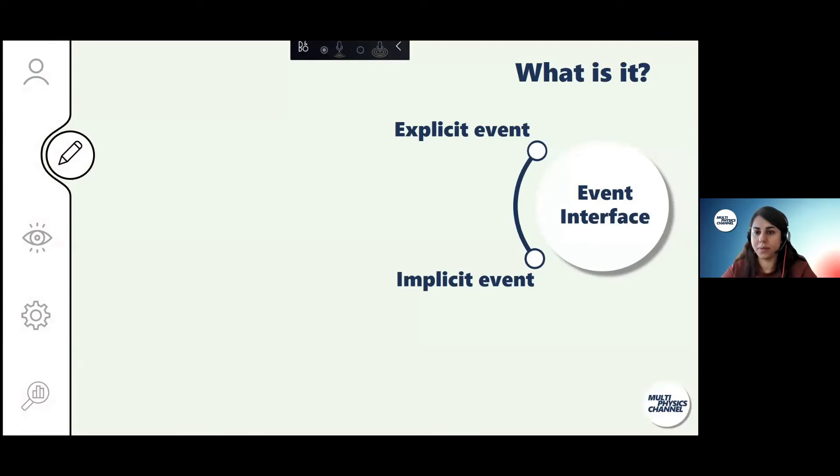We have two types of events. First one is explicit events. When you have a value for your parameter and you want to change this value after a certain point in time, you know exactly when you want to change the value. Then after this point you change the value.